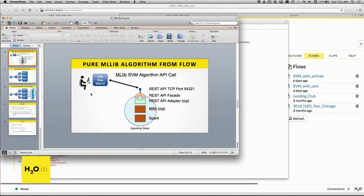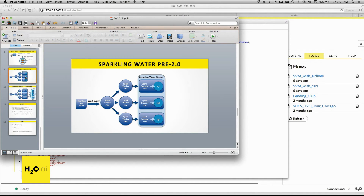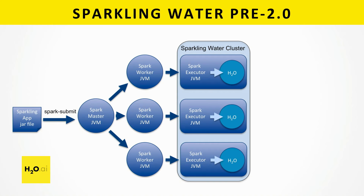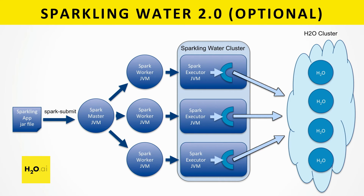I want to show you the second part of Sparkling Water 2.0. This is the pre-2.0 picture — the executor JVMs have Spark stuff and H2O stuff together in the same JVM. Some people have seen in their large data experiments that Spark executors will disappear and come back, and that gives H2O trouble. H2O wants to have a persistent life cycle, and the Spark life cycle is a little different. So what we've done is have a mode in the next version where we extract that H2O cluster out, start it early, have it be stable, and then have a little stub inside the Spark executor JVM.